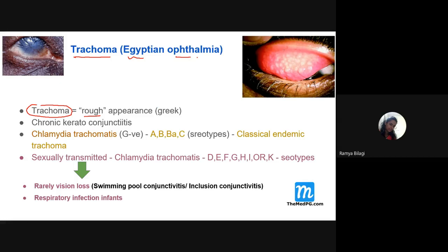You can see in the picture some roughened area — these are the follicles. This roughness is why it is called trachoma, meaning rough appearance. In the eye there will be a rough appearance. Trachoma basically involves the sclera and the conjunctiva.